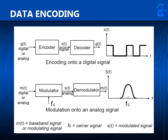Next, we have the modulation onto an analog signal. Similarly, we'll start with the baseband signal. This time it's labeled M of T. It will pass through a modulator. The modulator modulates a carrier signal of fixed amplitude and frequency with respect to M of T.